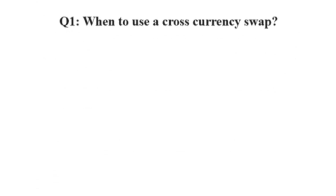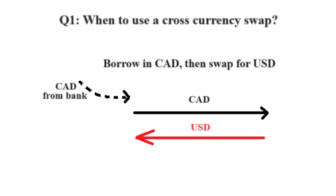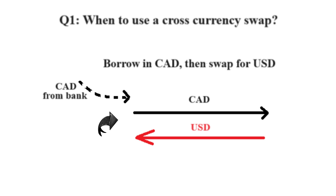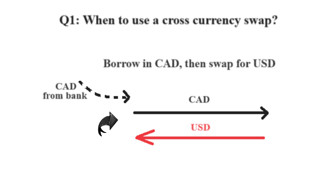The first use is to borrow in a specific currency. For example, in order to borrow in USD, you first borrow from the bank in CAD. Then you swap CAD into USD through a cross-currency swap to finally get the USD.